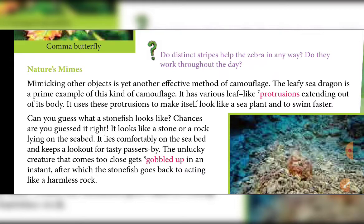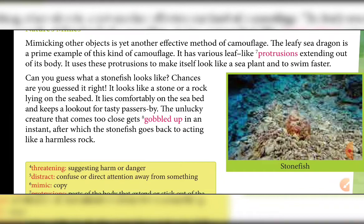When we look at the leafy sea dragon, it seems like a floating plant swimming in the water. Next, can you guess what a stone fish looks like? On screen you can see what appears to be small pieces of rock — but this is actually the stone fish.